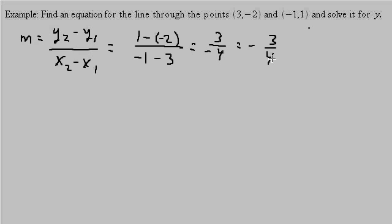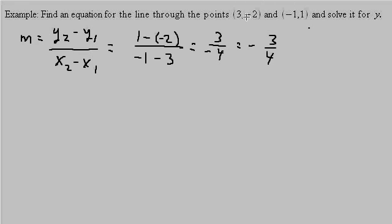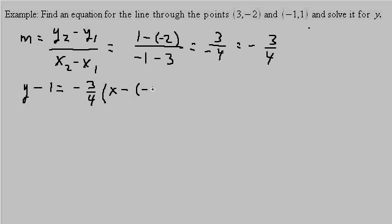Now we take this slope and plug it into the point-slope formula. We have the slope and we have x1 and y1. We can call either point x1, y1 — it doesn't matter which one you use for the point-slope formula. So I have y minus y1 equals m, which is negative 3 fourths, times x minus x1, which is negative 1.